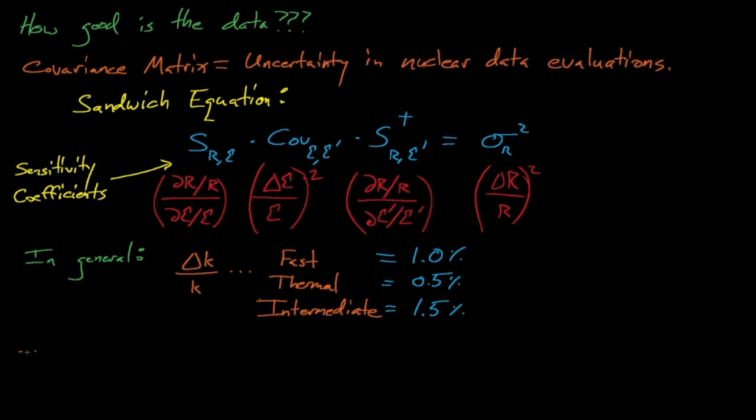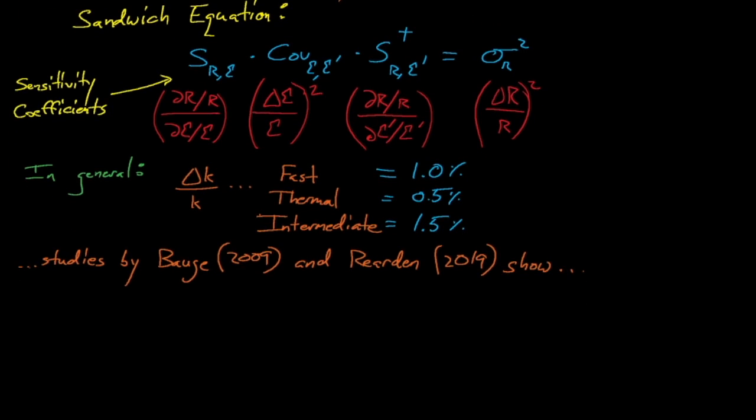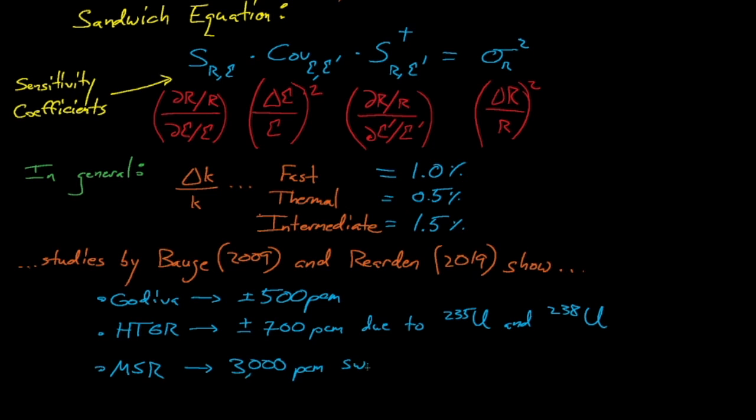Studies by Boje and Rearden have shown that you can change the eigenvalue for Godiva, a golden standard benchmark experiment, by roughly 500 PCM, or 0.5%, just by swapping out nuclear data from different libraries. There's also a roughly 700 PCM swing in HTGR simulation eigenvalues, due to uncertainty in U-235 and U-238 cross-sections, and Rearden and Perfetti have observed a more than 3,000 PCM swing in the eigenvalue of chloride-based molten salt reactor concepts due to errors in the chlorine-35 n,p cross-section.